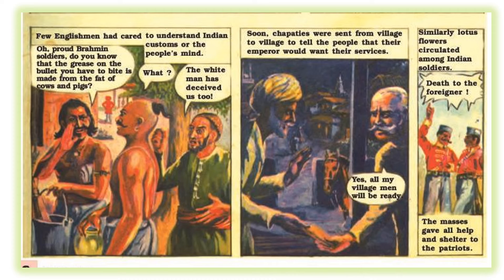People agreed and gave their consent for the fight: 'All my village men will be ready.' Similarly, lotus flowers were circulated among Indian soldiers serving in the British army as a symbol of the fight, and they also gave their consent to fight against the Britishers, saying 'Death to the foreigners.' The masses gave all help and shelter to the Patriots — people living in different villages stood against the Englishmen and supported the freedom fighters by providing them shelter and other assistance.